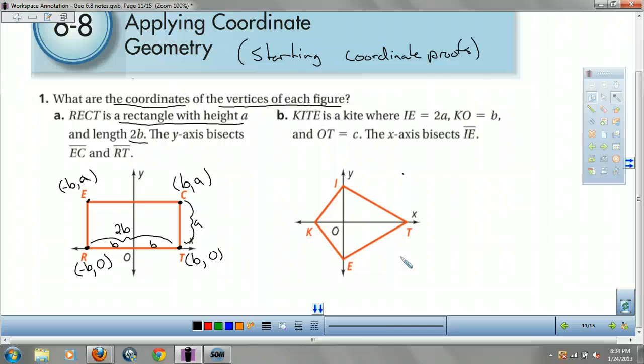Let's try kite. IE is 2a, KO is b, and OT is c. So this is c, this is b, this whole thing is 2a, right? Okay. At t, I know it's something zero because I'm on the y-axis, right? Same with at k, k is going to be something zero. With that respect I know i is going to be zero some number because I didn't go left or right anything, I'm on the y-axis. So e is also going to be zero something.